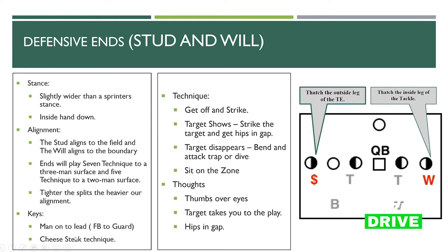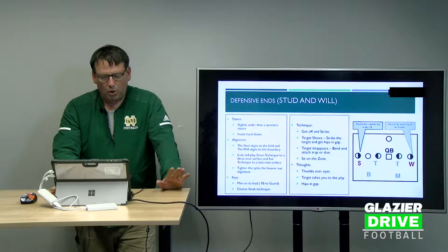We key the man on to the lead — either the fullback or the backside guard. We keep our hips back in a cheesesteak technique. Get off and strike, get your hips in gap. If the target disappears, bend and attack the trap or dive. If you get a zone block, sit on the zone. Thumb over the eyes, target takes you to the play, hips in gap. Our stud is in a seven technique and our will is in a five. Both have to learn each technique because we line up to the field, not to formations.